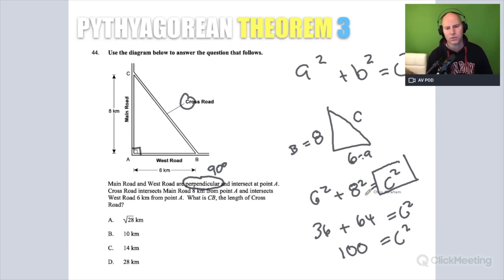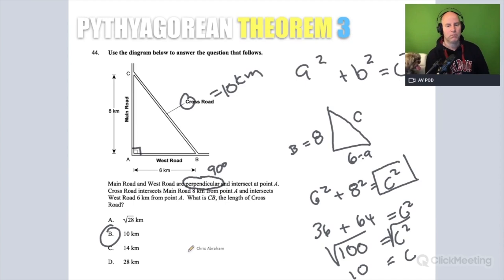And to find this hypotenuse here, I'm going to square root both sides. We just said before, the square root of C squared is C. The square root of 100 though, the square root of 100 is 10. So cross street is 10, 10 kilometers. The answer is B. Not that bad. Let's do a harder problem using the same math.